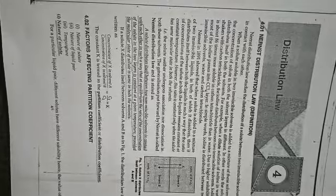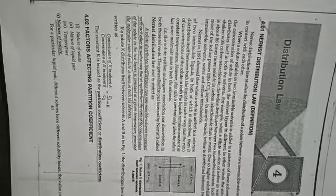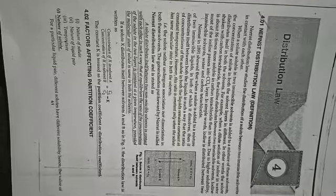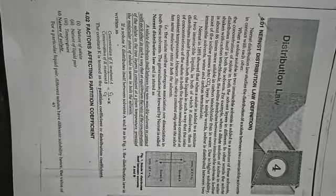If solute X distributes itself between solvent A and solvent B, the distribution law is written as: concentration of X in solvent A divided by concentration of X in solvent B equals C₁/C₂ = K. The constant K is termed as the partition coefficient or distribution coefficient. Factors affecting partition coefficient: first, nature of solute; second, nature of liquid pair; third, temperature.